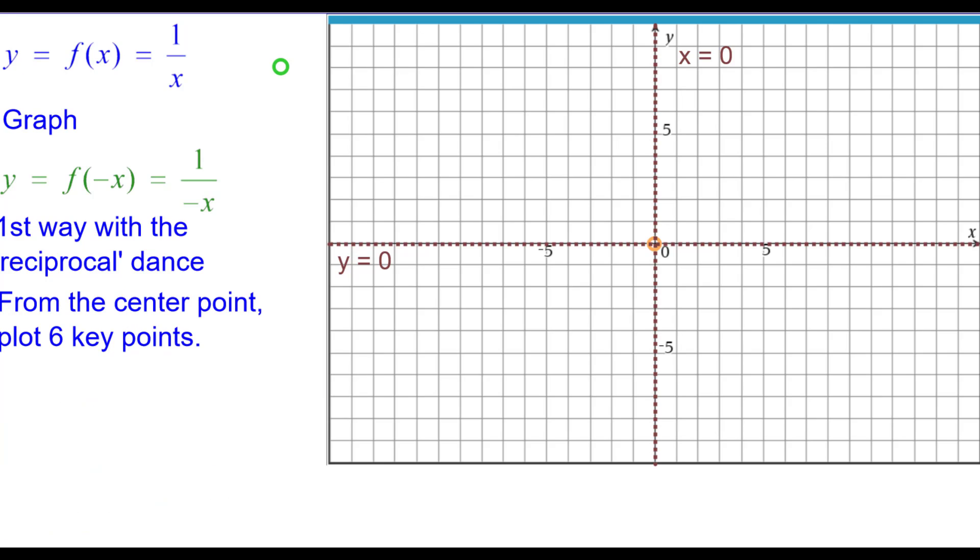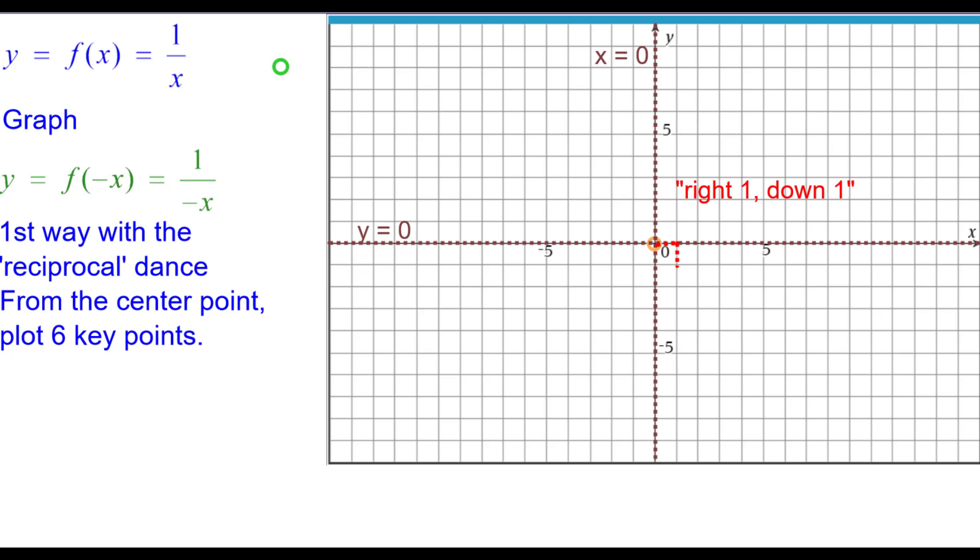From the center point, we're going to plot six key points. Normally we go right one up one, but because of the opposite of that one, we're going to have to go down one. Normally we would go right two and up a half, but because of the negative sign we're going down a half. And right a half up two normally, but right half down two because of that opposite sign.